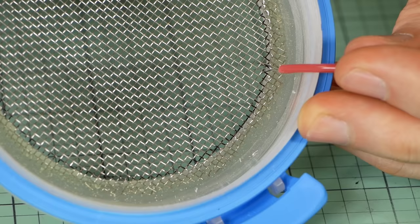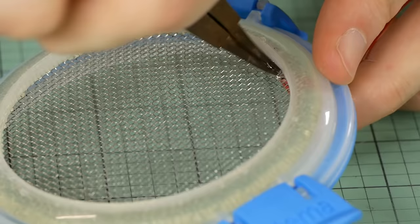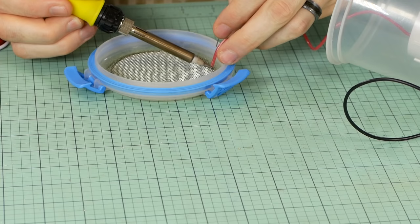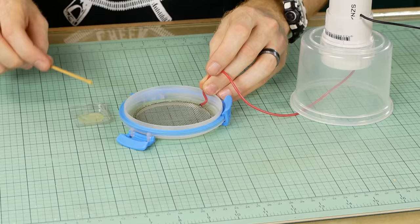We're almost finished. The high voltage output line is soldered onto the wire mesh. You may need to solder from both sides depending on the mesh. The wire mesh I use tended to repel the solder a little. Now with it soldered in place, I apply some more two-part epoxy to secure it to the lid of the container.